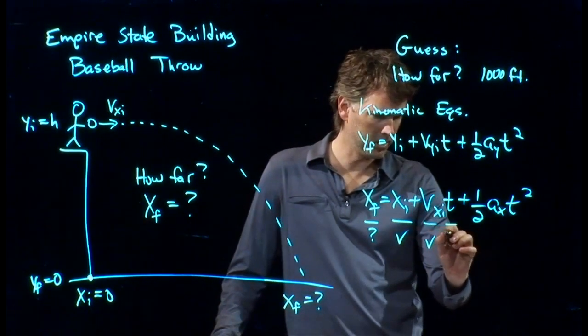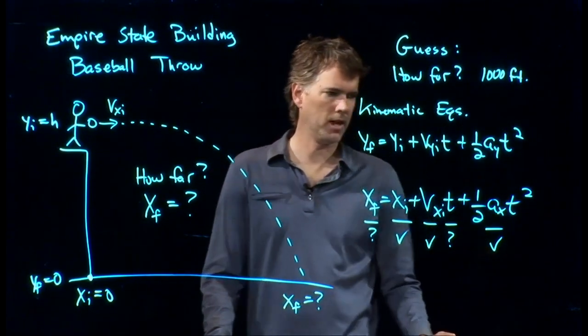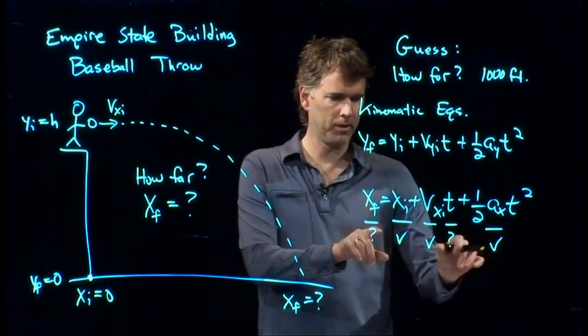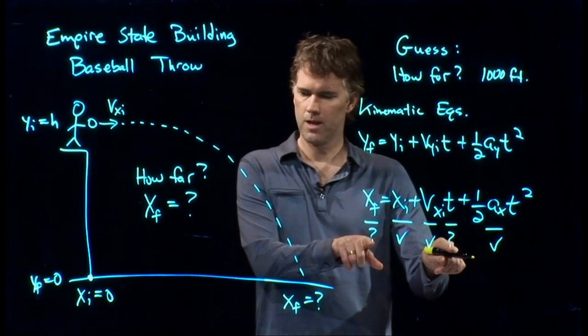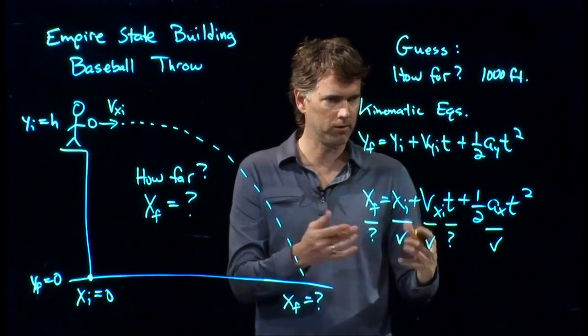Time, we don't really know yet. Acceleration, we do know. Right? That's equal to zero. So this is one equation, but we got two unknowns. And that's a big no-no, right? If we have two unknowns, we need two equations.